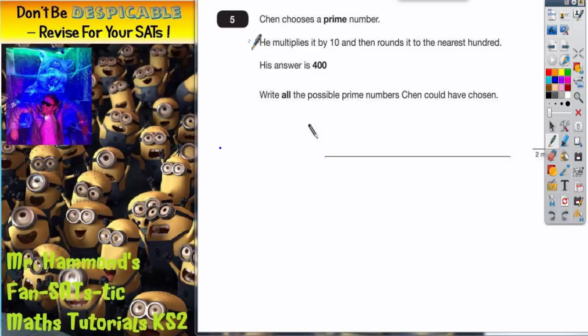Chen chooses a prime number, he multiplies it by 10 and then rounds it to the nearest 100 and his answer is 400. Write all the possible prime numbers he could have chosen.